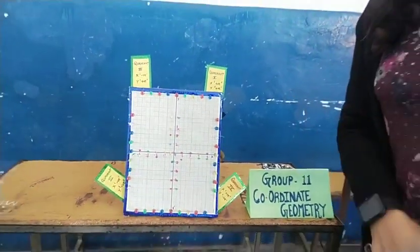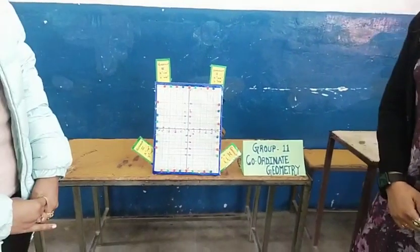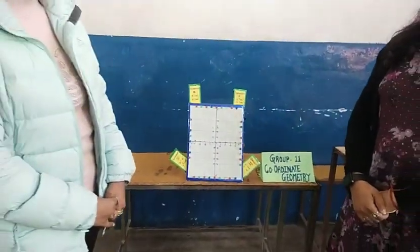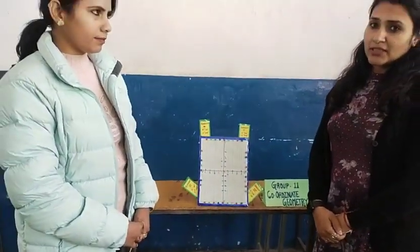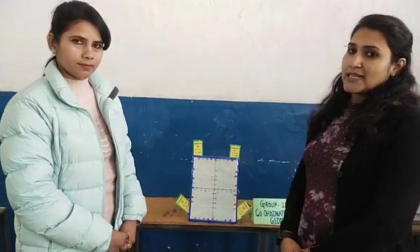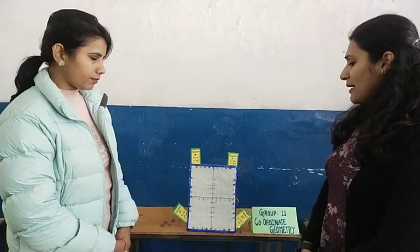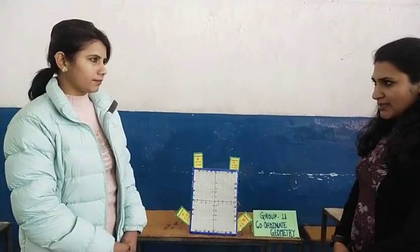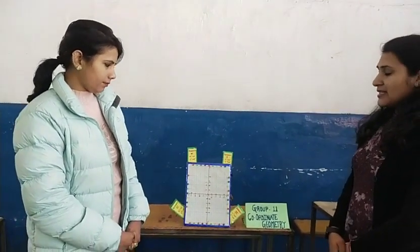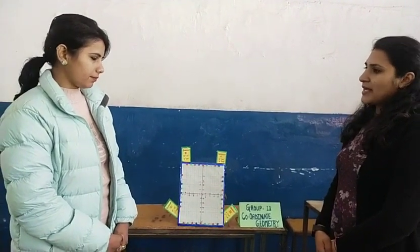Now we will play a game in which you have to plot points by guessing the numbers. You have to plot a point in Quadrant 1 where the x-axis value is the cube root of 27, and the y-axis value is an even prime number.